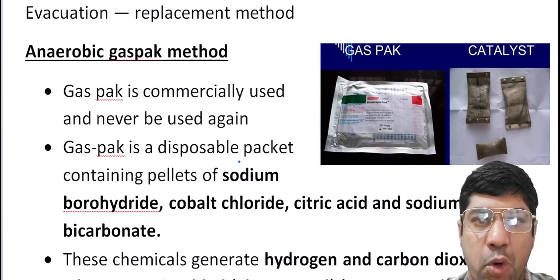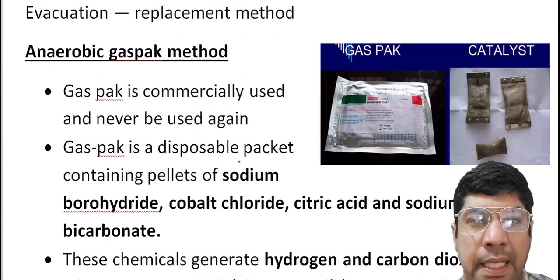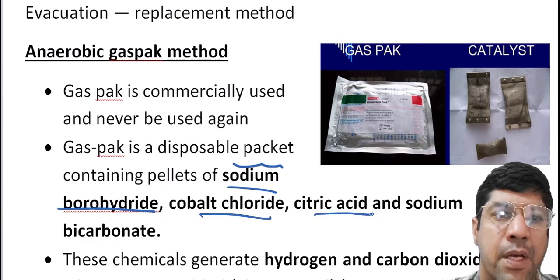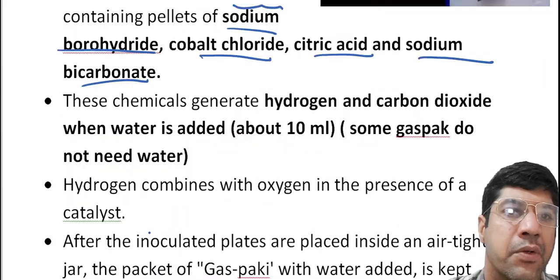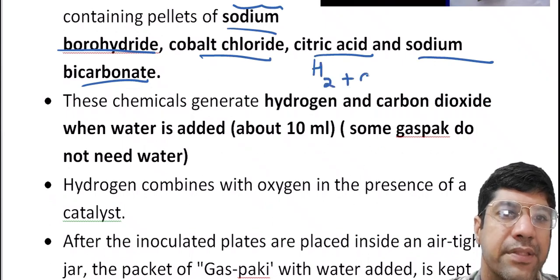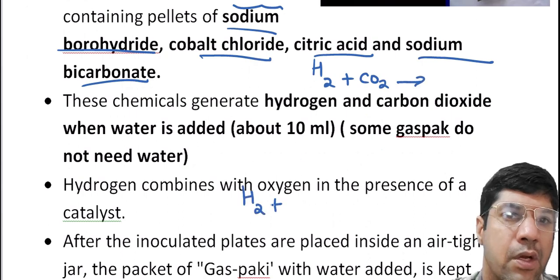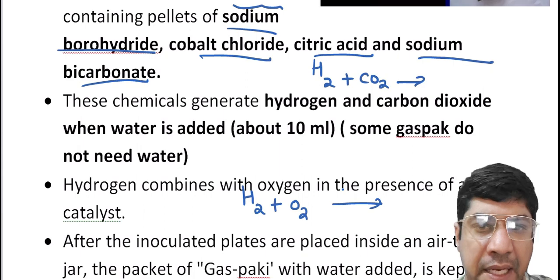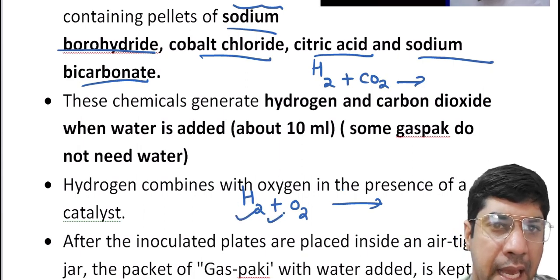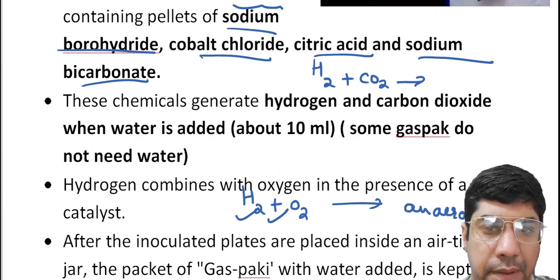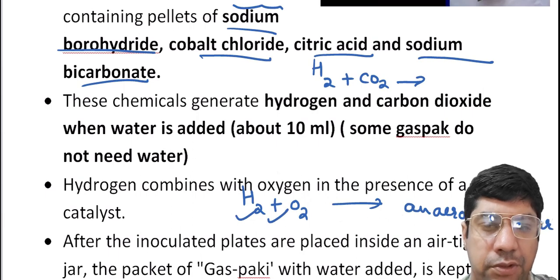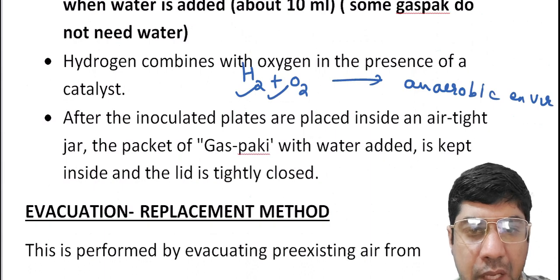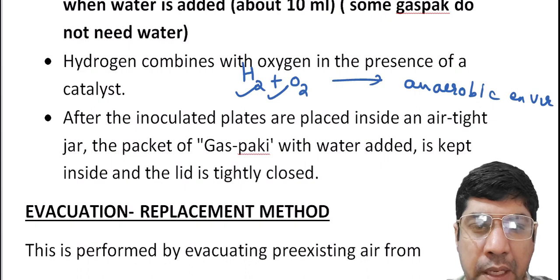Another method is the gas pack method. It is a modern and widely preferred method for creating an anaerobic atmosphere for bacterial culture. It contains a packet with pellets of sodium borohydrate, cobalt chloride, citric acid, and sodium bicarbonate. These chemicals generate hydrogen and carbon dioxide when water is added. The hydrogen combines with remaining oxygen via a catalyst, creating an anaerobic environment. It is easy to use as it removes the need for vacuum pumps or additional hydrogen gas.